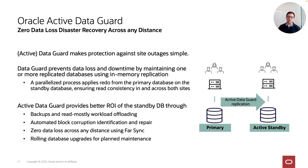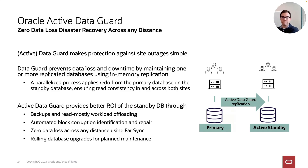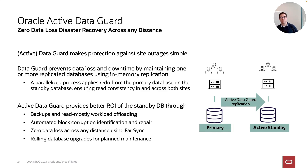Active Data Guard also provides zero data loss across any distance using a component called Farsync, which stores redo closer to the primary in a synchronized fashion — so you sync redo to the Farsync and then spread longer distances using asynchronous replication. Last but not least, rolling database upgrades for planned maintenance are also possible with Active Data Guard, making it a more complete solution for planned maintenance operations.